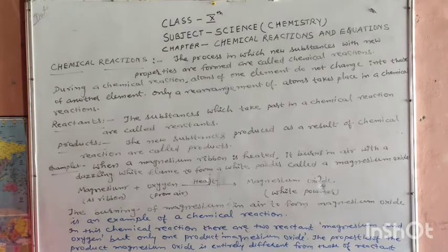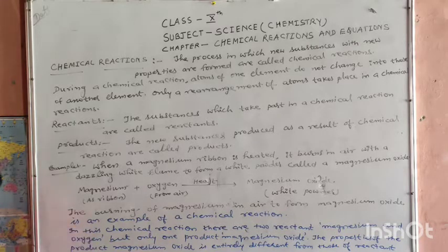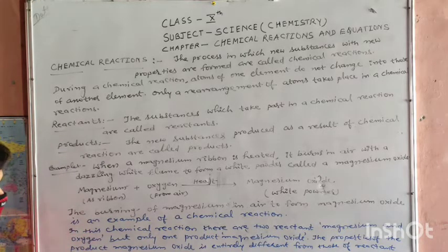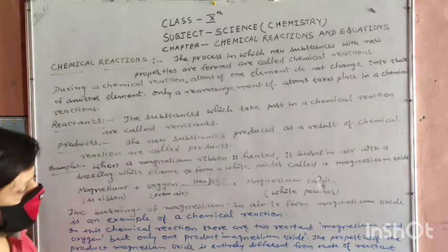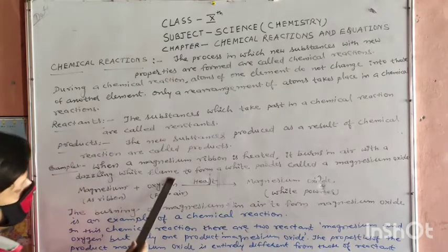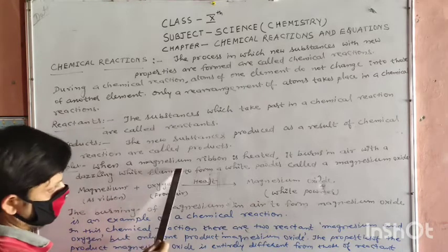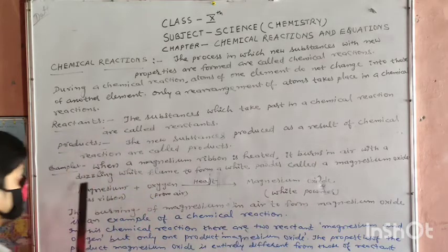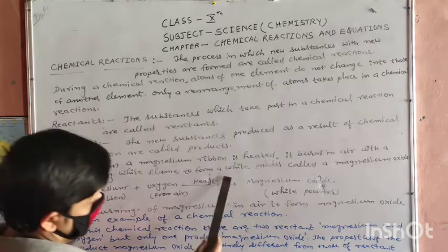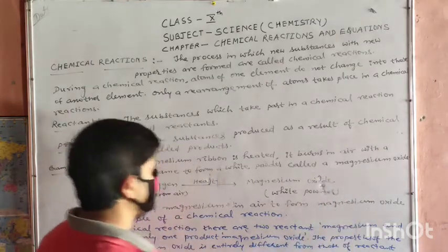Here is an example of a chemical reaction. Magnesium is a metal with a white color. When magnesium is heated, it burns in air with a dazzling white flame and forms a white powder called magnesium oxide.